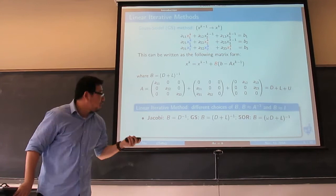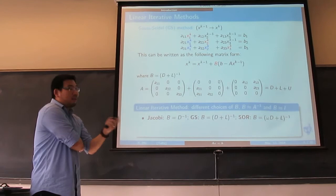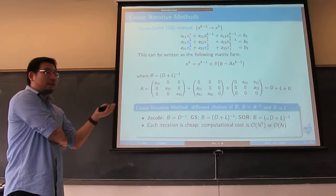Here are several choices you could use: Jacobi uses D inverse, that's the diagonal inverse; Gauss-Seidel is lower triangular inverse; you can also use upper triangular inverse. SOR is basically lower triangular inverse but you put some weight in front of D to improve the approximation. There are other different choices of B.